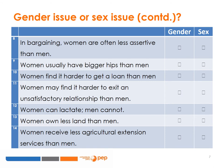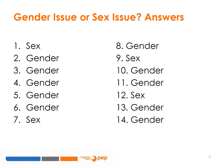Women own less land than men — is this a gender issue or a sex issue? Women receive less agricultural extension services than men — is this a gender issue or a sex issue? Here are the answers to the questions on the previous slides. Did you get them right? Do you now have a sense of how social norms determine whether an issue is a gender issue or whether it is purely a biological difference between men and women?